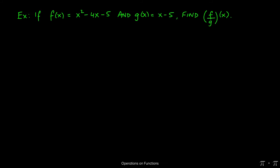In this problem, we're given f of x as x squared minus 4x minus 5, and g of x as x minus 5, and the question is asking us to find f over g of x.